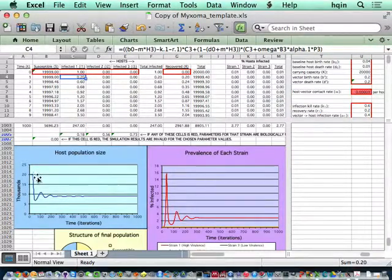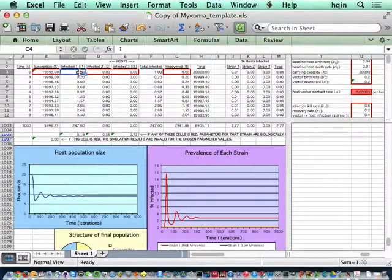These two, in fact, the blue line and the red line, they should be more or less opposite to each other. So this is for strain one.